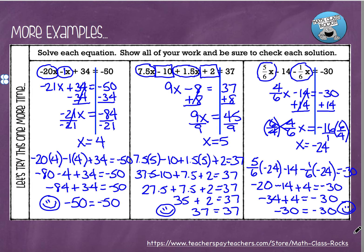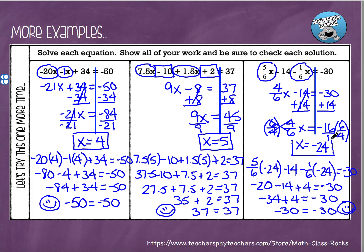So to recap: the first one, x equals 4 — we know it was correct because we checked it. The second equation was x equals 5 — again, correct because we checked it. And then finally, the third one with the fraction was x equals negative 24 — we knew it was right because we checked it. I'm hoping that this video was helpful and that you guys understand how to solve equations with like terms. If you need to watch the video again, you can always rewind. If you feel like you need a little bit more help, ask your teacher — we love when our students ask questions. I will see you guys next time.